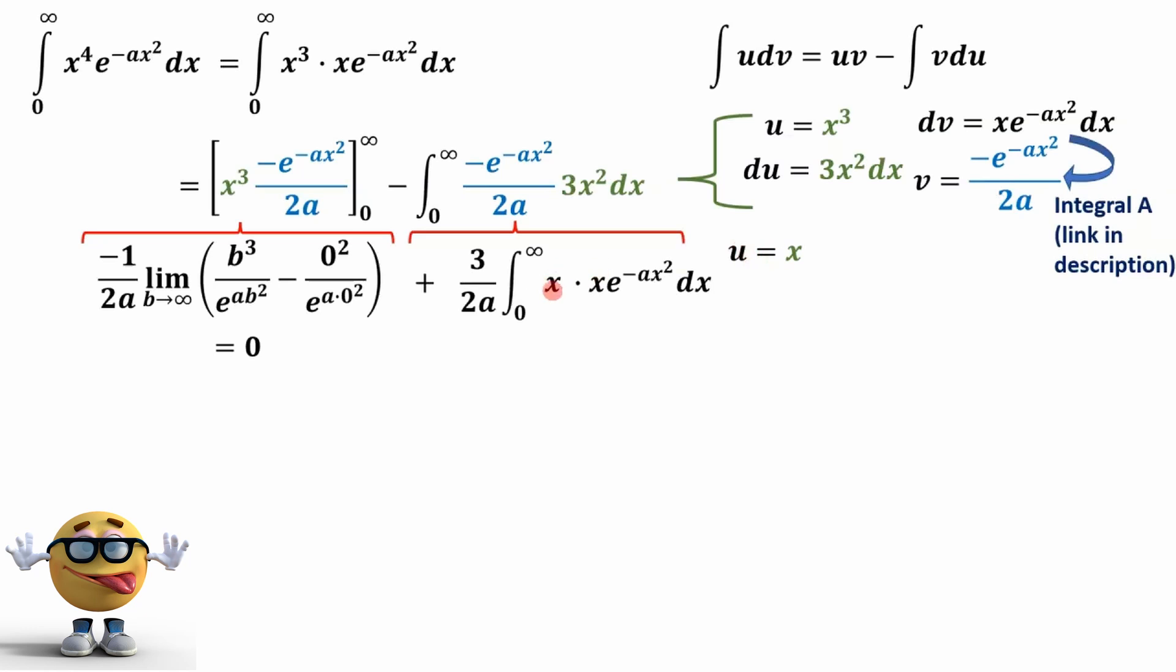So we're going to set u equal to x, and therefore du equals to dx. And now dv is going to equal to everything else, which is this. This is our dv, everything else. And the integral of dv is v. The integral of this is exactly what we did. See, this is the exact same form. So you can check out my video, or we just do a simple substitution because the derivative is here of the exponent or close to the derivative, just off by a constant.